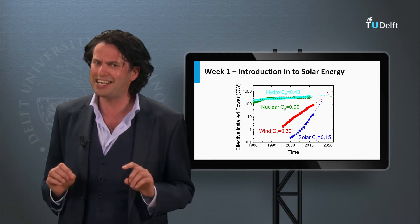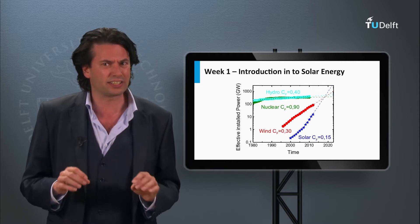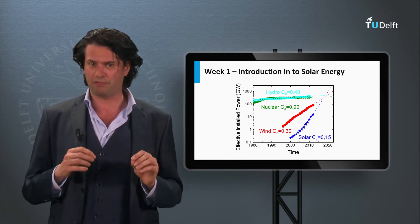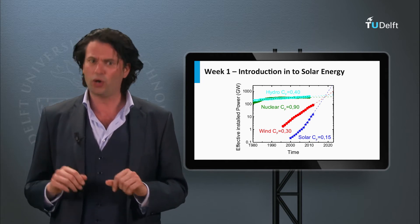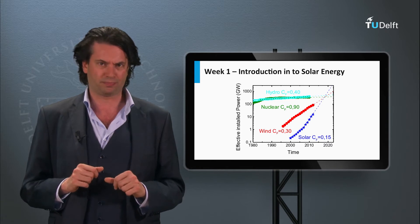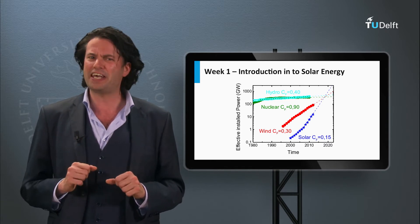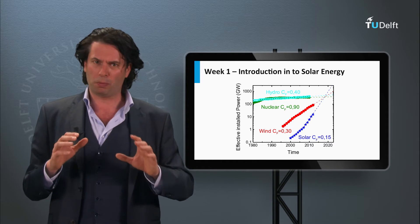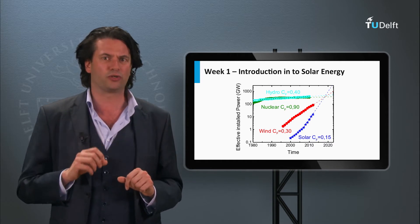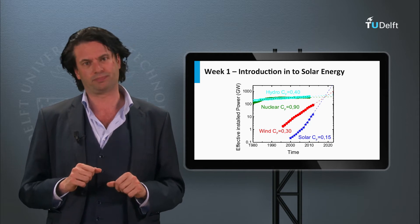The forces behind this fast growth are the decentralized character of domestic PV systems combined with the grid parity achieved in many countries. Soon PV installations around the world will break through the magic level of a 1% contribution to the worldwide electricity production.